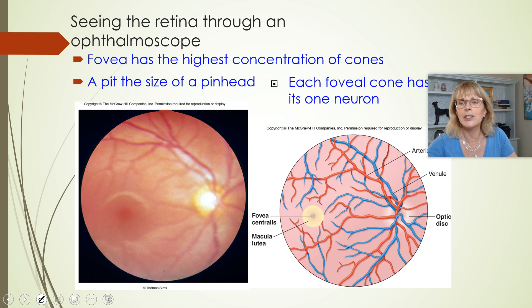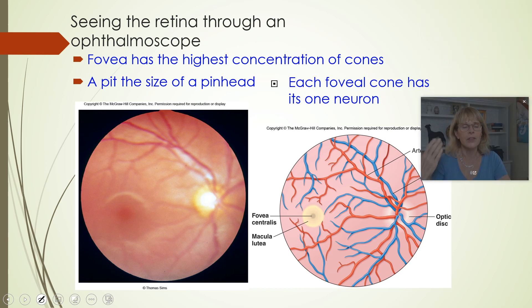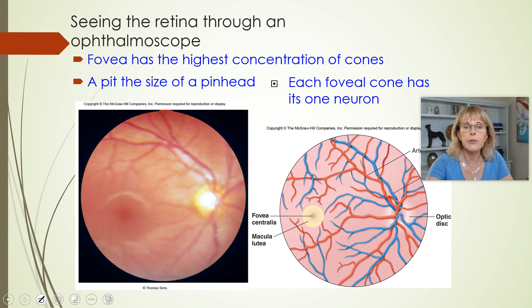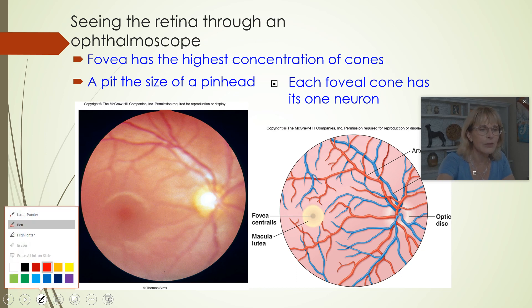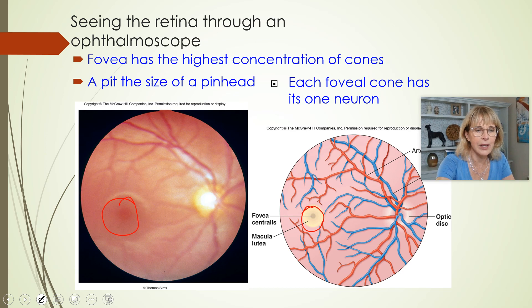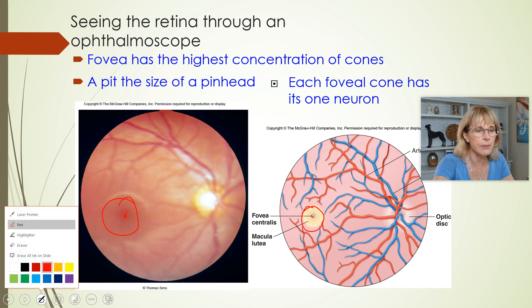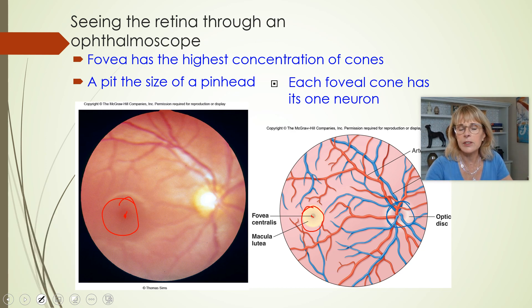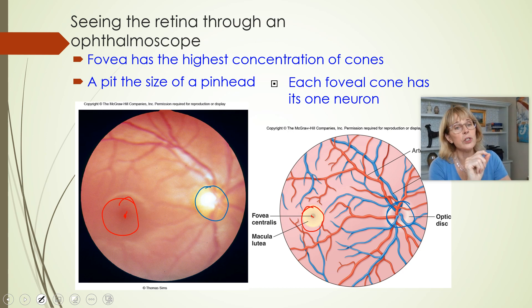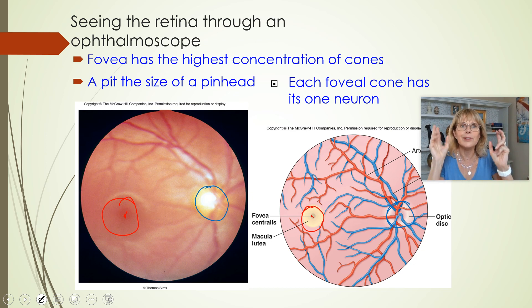This is what the doctor sees when they look through your eye. The fovea centralis is this area right here — the fovea is right there in the center. The optic disc, which I'll circle in blue, is the reason you have a blind spot. The fovea is where we do most of our seeing. When you're staring straight at something, like trying to thread a needle, what you are doing is asking the light bouncing off of that to hit right there at the fovea. All of your peripheral vision is all the rest of the retina, but that tiny area — just the head of a pin — that's what you do almost all of your detailed seeing with.